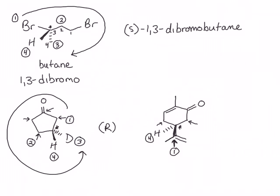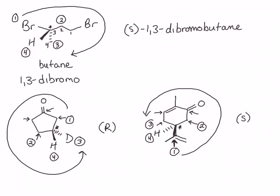When we compare the other two carbons, we look one atom further out. The carbon on the right is bound to an oxygen, while the carbon on the left is bound only to carbon and hydrogen. This makes the right one the second highest priority and the left one the third highest. The hydrogen is conveniently drawn pointing away from us already, so we look at the direction of rotation from one to three. This is counterclockwise, making this the S designation.